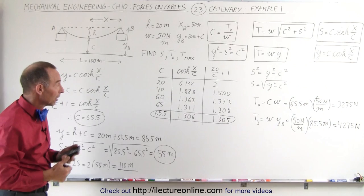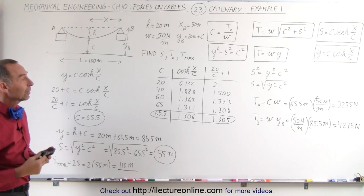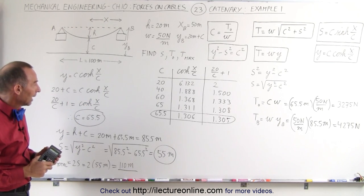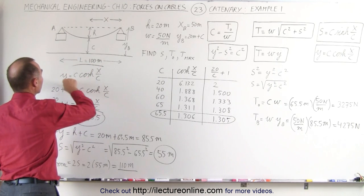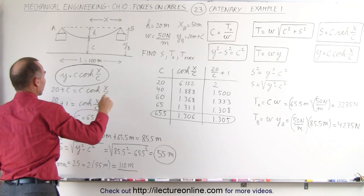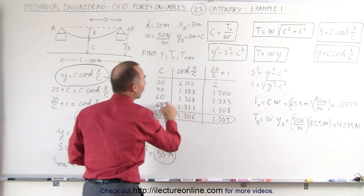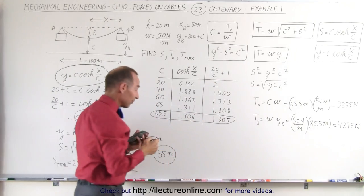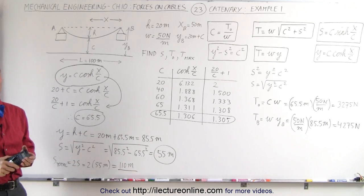And that's how we find the cable length, the minimum tension, and the maximum tension. Notice there's a difference of 1,000 newtons between them. Starting with the catenary equation, converting it to the iterative form, and finding C where both sides are equal gives the proper value of C — and that's the only way to do it: the iterative process. That's how you solve catenary problems.